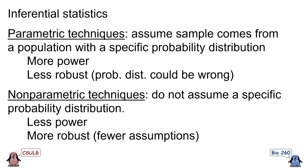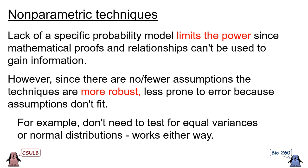Nonparametric techniques, in contrast, do not assume a specific probability distribution for the population. That results in them having less power, but they're more robust because there are fewer assumptions that may be violated. The lack of a specific probability model limits their power because all the mathematical proofs and relationships that we have for certain probability distributions can't be used to gain information about the system. However, since there are fewer assumptions, the techniques are more robust and we are less likely to make an error by using a technique for which the assumptions are not true.